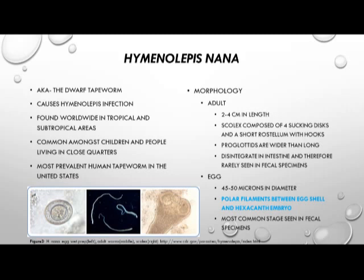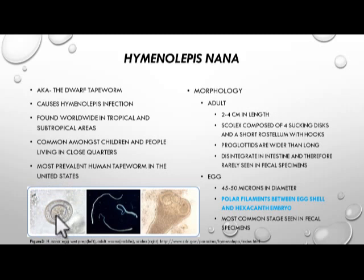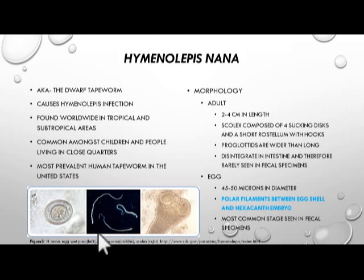The eggs are 40 to 50 microns in diameter with polar filaments protruding from the terminal ends of the hexacanth embryo. The bottom image here is the hexacanth embryo in the shell of Hymenolepis nana, with the terminal ends showing the polar filaments extruding. The middle image is an adult worm and the right image is the scolex of Hymenolepis nana. The adults are fairly delicate; they disintegrate in the intestine, so the eggs are the most common stage seen in fecal specimens.